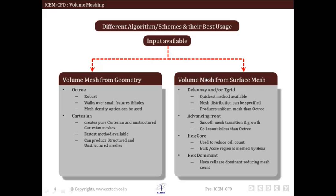The other method is to create volume mesh from surface mesh. This is the generally used methodology, and various algorithms are available. We have the Delaunay or T-Grid type of algorithm — the quickest method available — which can specify different mesh densities and produces more uniform mesh than the direct octree method. Then we have the Advanced Front type of algorithm, which controls smooth mesh transition and growth, with less cell count than the octree method. The Hex Core algorithm reduces cell count by meshing the bulk or core region with hexa elements while the rest uses unstructured or tetra mesh. Finally, Hex Dominant makes hexa cells dominant, further reducing the mesh count.